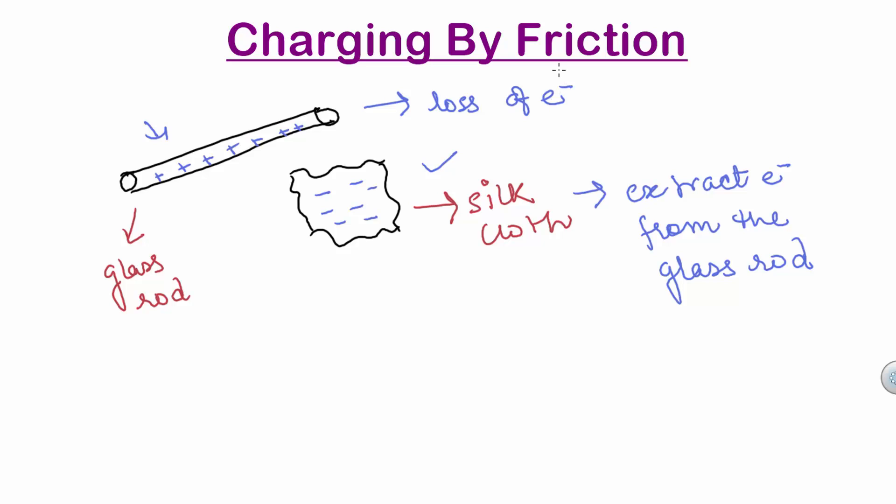Similarly, there are many such materials which get electrically charged when they are rubbed against each other. For example, when we rub a woolen cloth with ebonite or very hard rubber rod, the woolen cloth becomes positive and the ebonite rod becomes negative in charge.